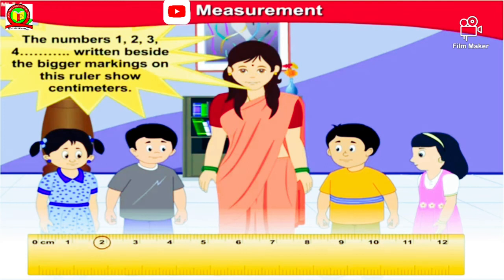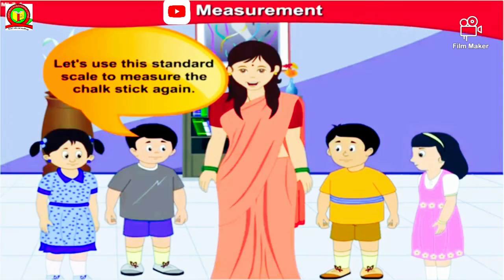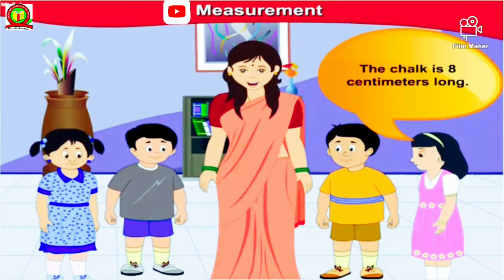Alright Tony, now that you have spoken about a ruler, let me show you a ruler. The numbers 1, 2, 3, 4 and so on written beside the bigger markings on this ruler shows centimeters. Between two big markings there are small markings. Can you see them? Yes, yes. They show units of length smaller than centimeters. Now let us use this standard scale to measure the chalk stick again. Yeah sure, the chalk is 8 centimeters long.